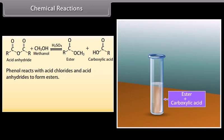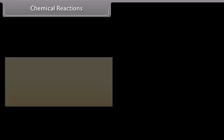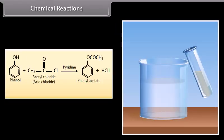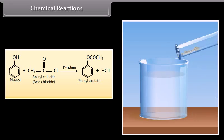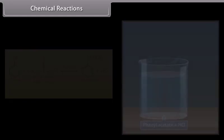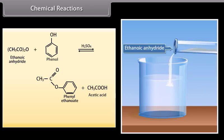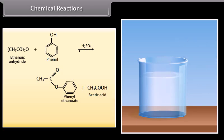Phenol reacts with acid chlorides and acid anhydrides to form esters. Phenols do not easily undergo the esterification reaction with carboxylic acids because the reaction is endothermic. Phenol reacts with acetyl chloride in the presence of pyridine to form phenyl acetate and hydrochloric acid.